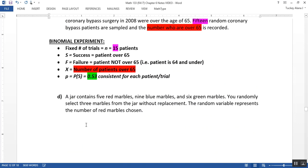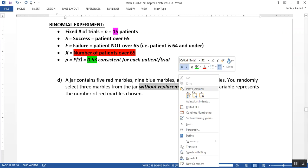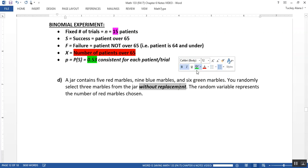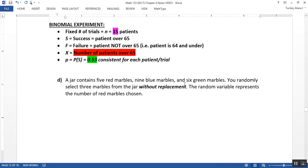All right. Next one. A jar contains five red marbles, nine blue marbles, and six green marbles. You randomly select three red marbles from the jar without replacement. Uh-oh. That's a concern. Because if you're going to do this without replacement, then you're losing something. You're losing independence. And then you're also losing your probability of success. It's not going to consistently be the same from trial to trial. So this is not binomial.